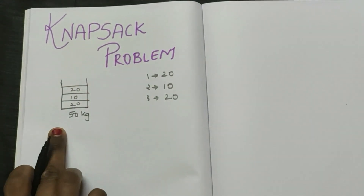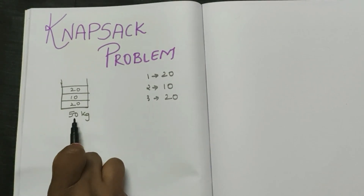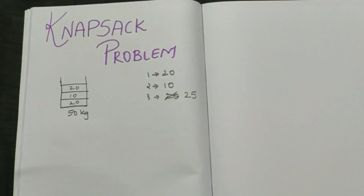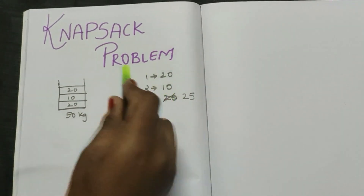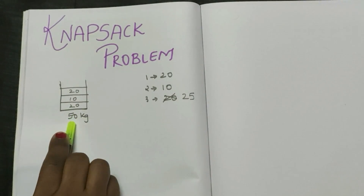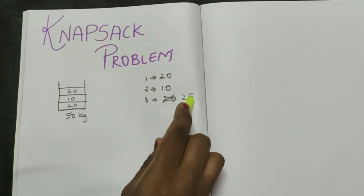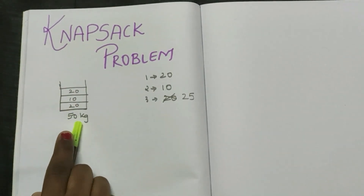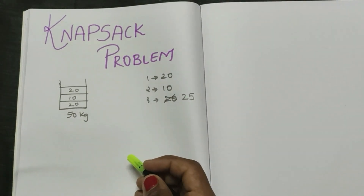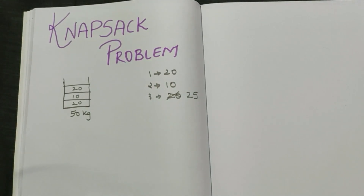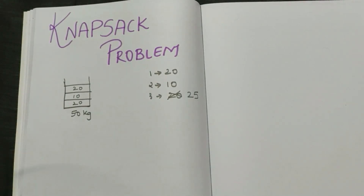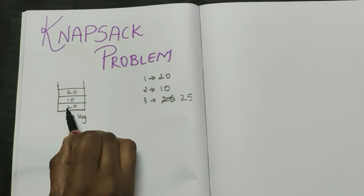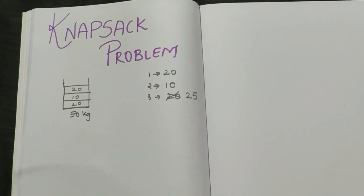Now suppose the third object weighs 25 kg. You can't put this third object fully into the sack because the total would be 55 kg, exceeding the 50 kg limit. This is where the knapsack problem gives us an option: you can place the whole object or just a fraction of it into the sack.